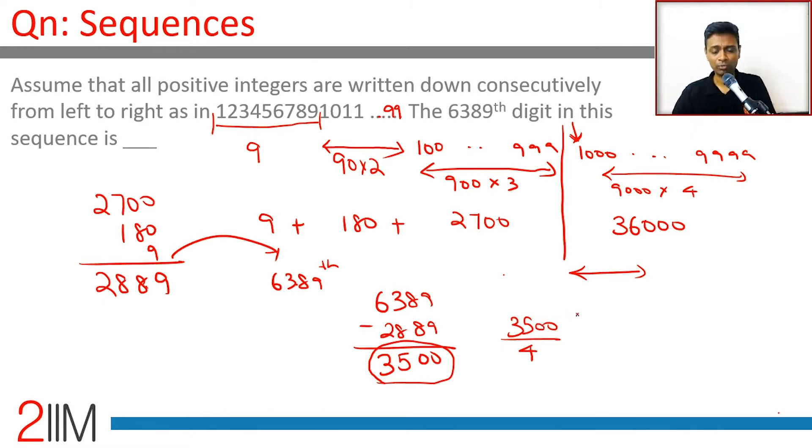3500 divided by 4. So 35 by 4 is 8, 30 that is 7, 25, 875. So the 875th 4-digit number. The last digit of the 875th 4-digit number. That's what we are looking at.